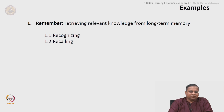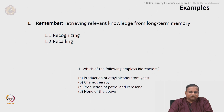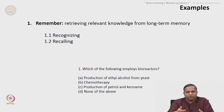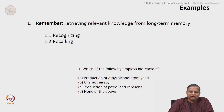Now let me give you examples to understand these levels. First, remember: retrieving relevant knowledge from long-term memory, recognizing and recalling. For example, the question 'Which of the following employs bioreactors?' with choices: A) production of ethyl alcohol from yeast, B) chemotherapy, C) production of petrol and kerosene, D) none of the above. The person must be able to recall factual information to answer. The answer is A, and this question tests the student at the remember level.